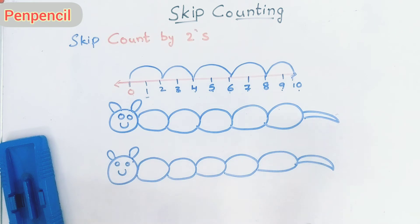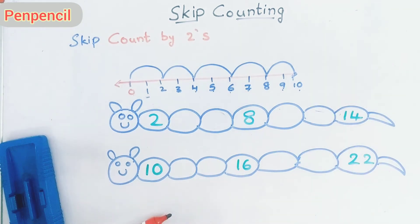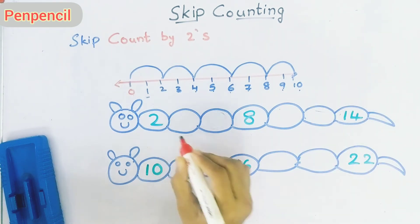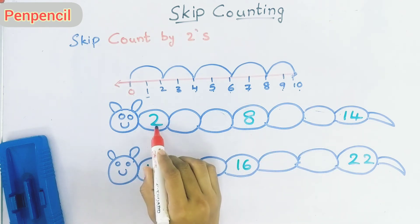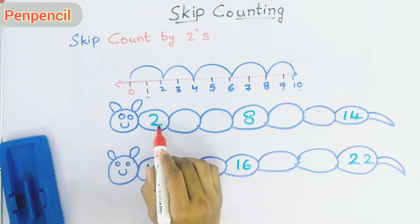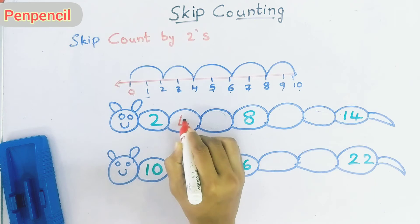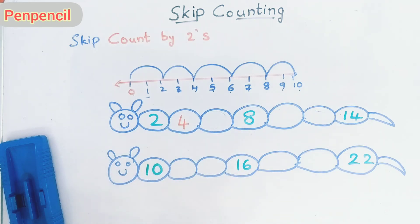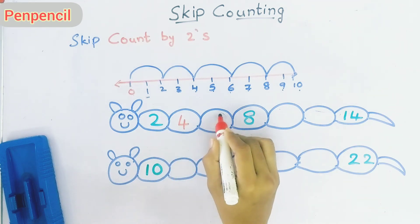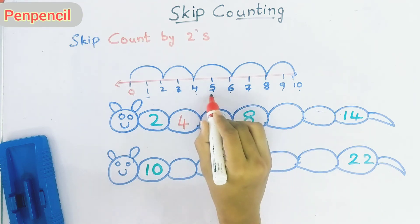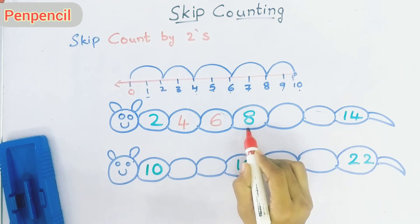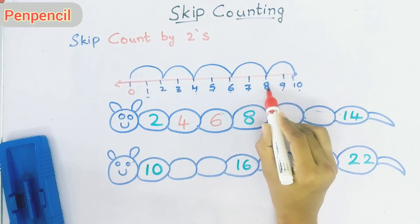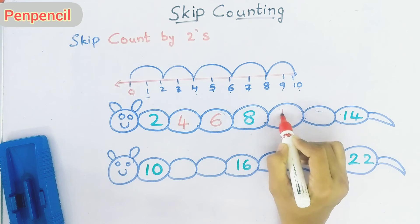Now you have to fill in the blanks with skip counting by twos. The first number given is two. What is the next number after two? Skip counting by twos — after two the number is four. Next: four, then six. Eight is already given, and the next number after eight is ten.